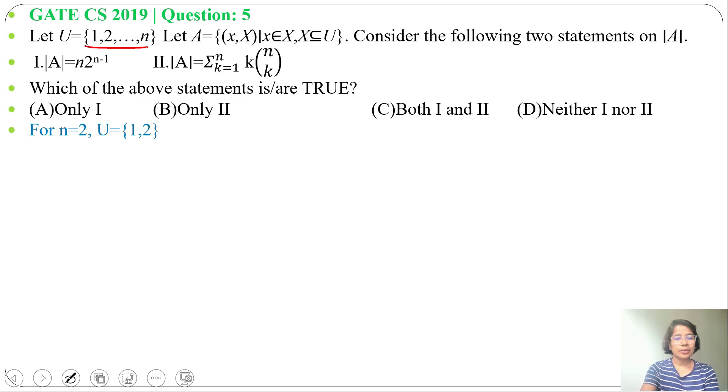Now when U equals 1, 2, what will X contain? This uppercase X is all subsets of U. X is a subset of U, so this X can be phi, subset of every set, 1 and 2 are subsets, and this set itself. Now what will small x contain? Small x can be 1, 2.